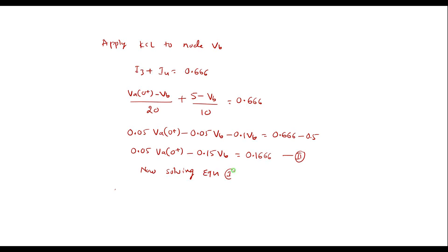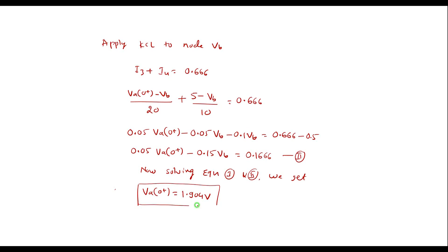Now solving Equation 1 and Equation 2 simultaneously, using a calculator and feeding in the values, we get va(0+) equal to 1.904 volts. This is the required result.